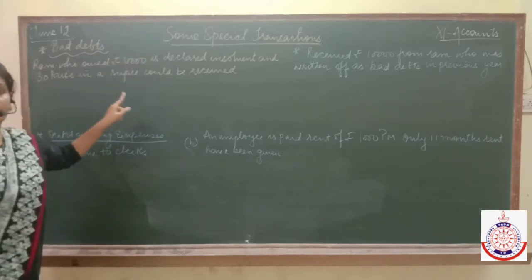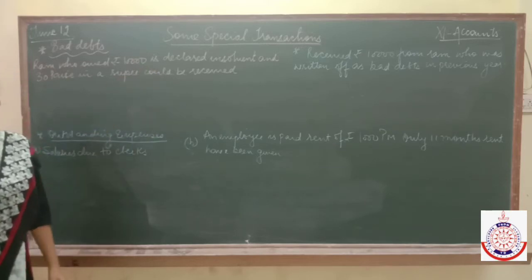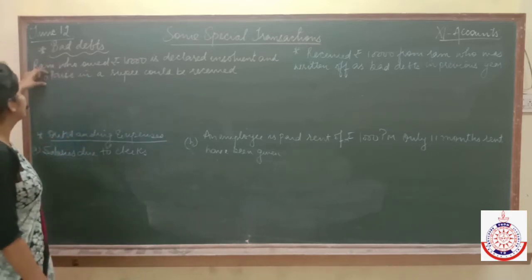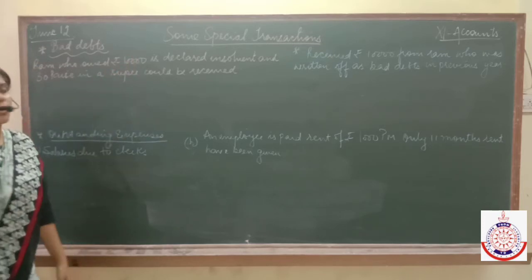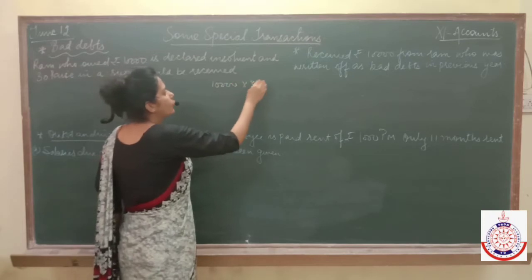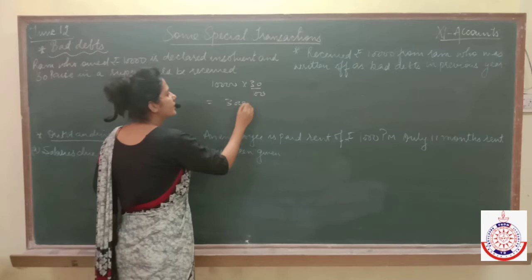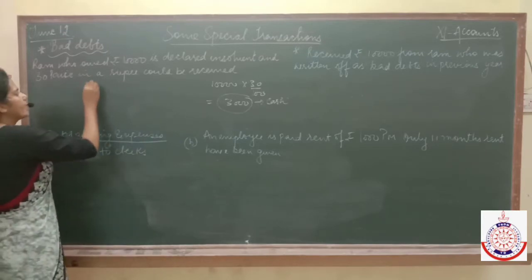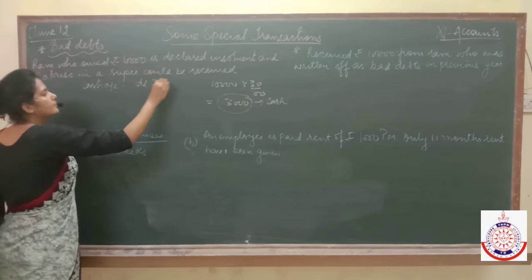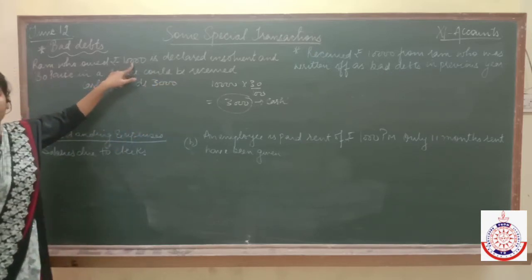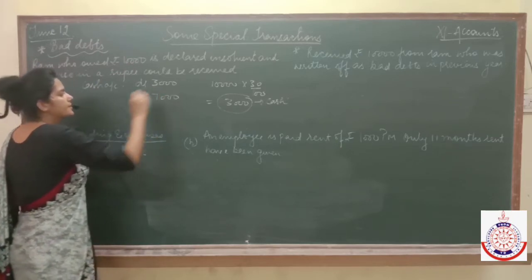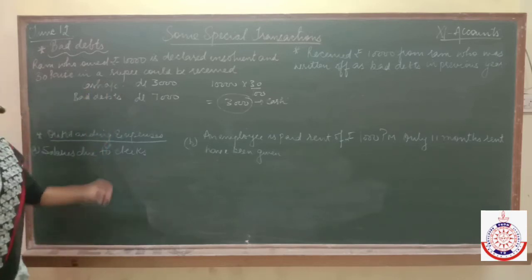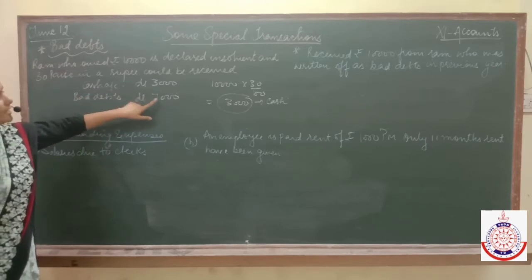Had it been 40 paisa in a rupee, Ram would have paid 40%; 50 paisa would mean 50%. But in this case it is only 30 paisa, so Ram will give us 30% of 10,000, which is 3,000. Only rupees 3,000 will come in cash from Ram. The remaining 7,000 becomes bad debts. Cash is debited because cash is coming into the business.